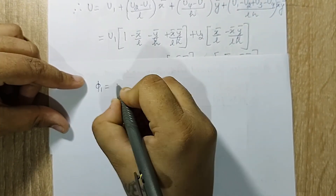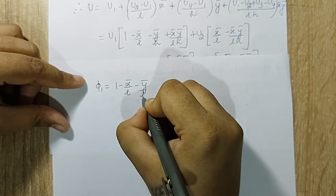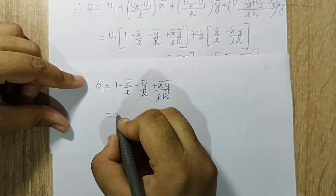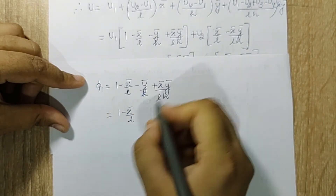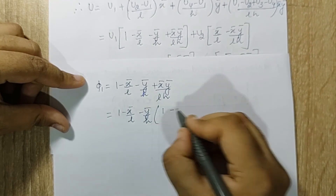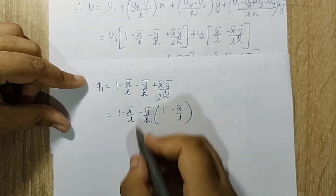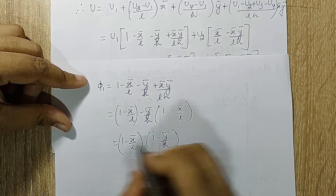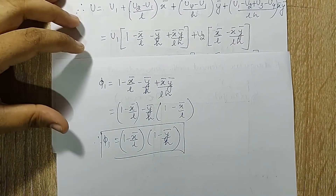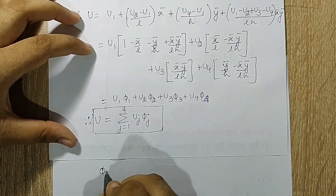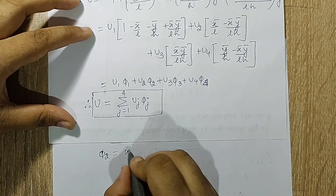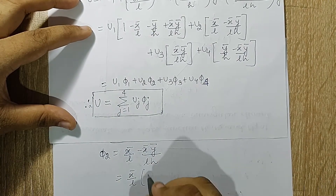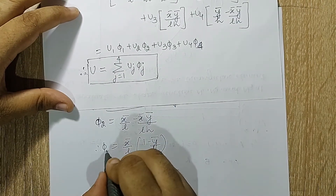From the collected terms, φ1 = 1 - x̄/l - ȳ/h + x̄ȳ/(l*h). Taking (-ȳ/h) common from the last two terms gives (1 - x̄/l)(1 - ȳ/h), so φ1 = (1 - x̄/l)(1 - ȳ/h). For φ2 = x̄/l - x̄ȳ/(l*h), taking x̄/l common gives φ2 = (x̄/l)(1 - ȳ/h).